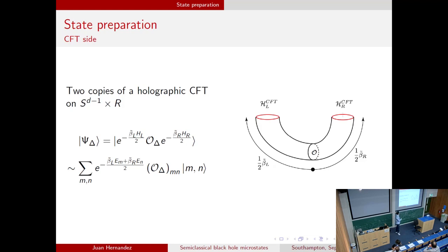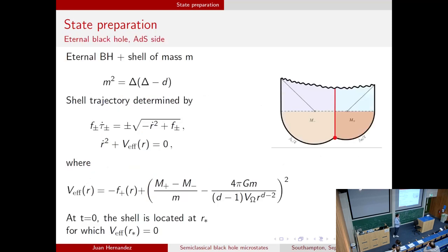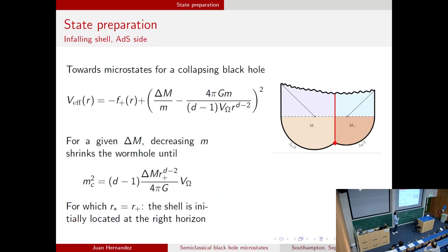Because of the insertion of the operator, there are actually two different Euclidean time evolutions in the preparation of the state. These states have nice geometric duals that look like two Euclidean black holes glued together along the trajectory of a spherical distribution of matter. The trajectory is solved by two conditions, and importantly at the T equals zero slice it looks like an Einstein-Rosen bridge that has been extended because of the presence of this spherical distribution of matter inside of it.